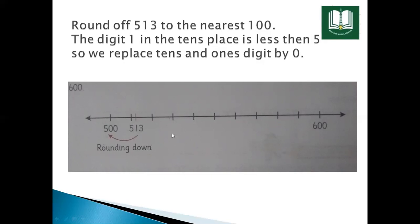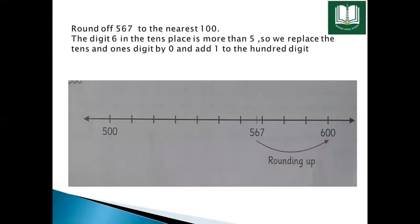In 513, the tens digit is 1. Since 1 is less than 5, we round down to 500. So 513 is nearest to 500. The tens place being less than 5 means rounding down; greater than 5 means rounding up.